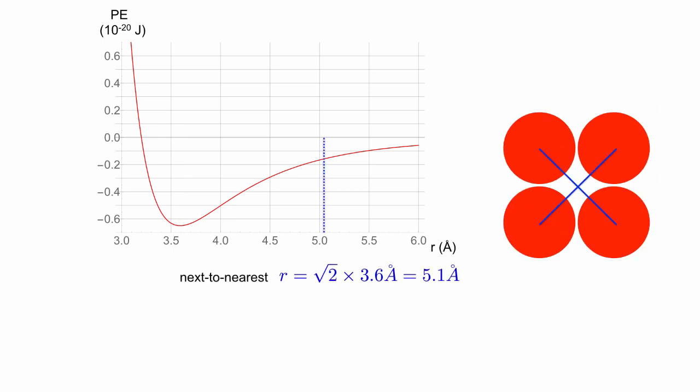If we wanted to go further and include next-to-nearest neighbors, then we would have to include the two bonds between the atoms that are diagonally opposite. From the geometry, we can see that the bond length along the diagonal is the square root of 2 times the nearest neighbor bond length, so for the next-to-nearest neighbors, we would calculate the potential energy at 5.1 angstroms, and then multiply by 2.